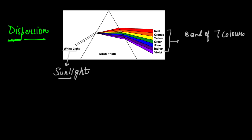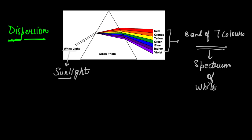So if you take a glass prism and pass white light or sunlight through it, at the other end you will see a band of seven colors which can be projected onto a screen. This band of seven colors is called the spectrum of white light — it is the band of constituent colors of white light.